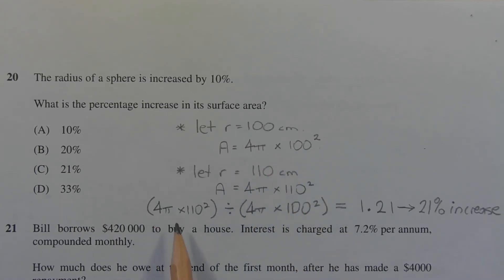So 4 pi times 110 squared in brackets divided by 4 pi times 100 squared in brackets gives us 1.21, which corresponds to a 21% increase in surface area. Therefore the answer is option C.